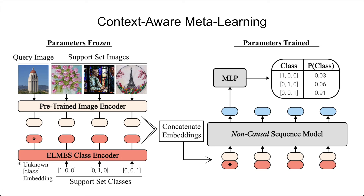For certain pairings, our meta-learner should be looking at the objects within an image to classify the unlabeled image. However, for that same support set but a different unlabeled image, we want it to dynamically adapt to a new classification setting. For example, replacing the query image of a tower with an image of embroidery should cause the meta-learner to now consider the textures within images — how those differ within the support set and between the support set and query image — to make a classification decision.